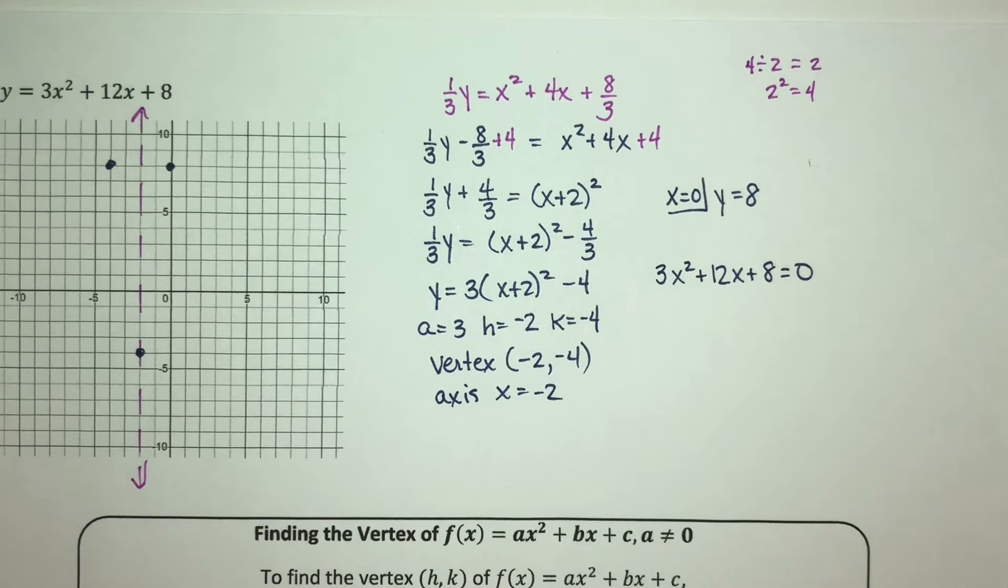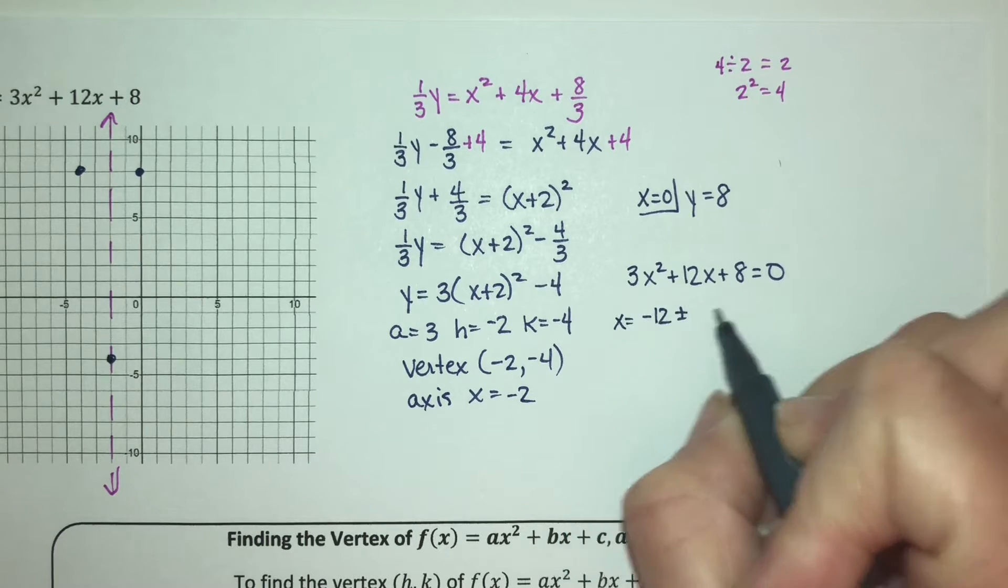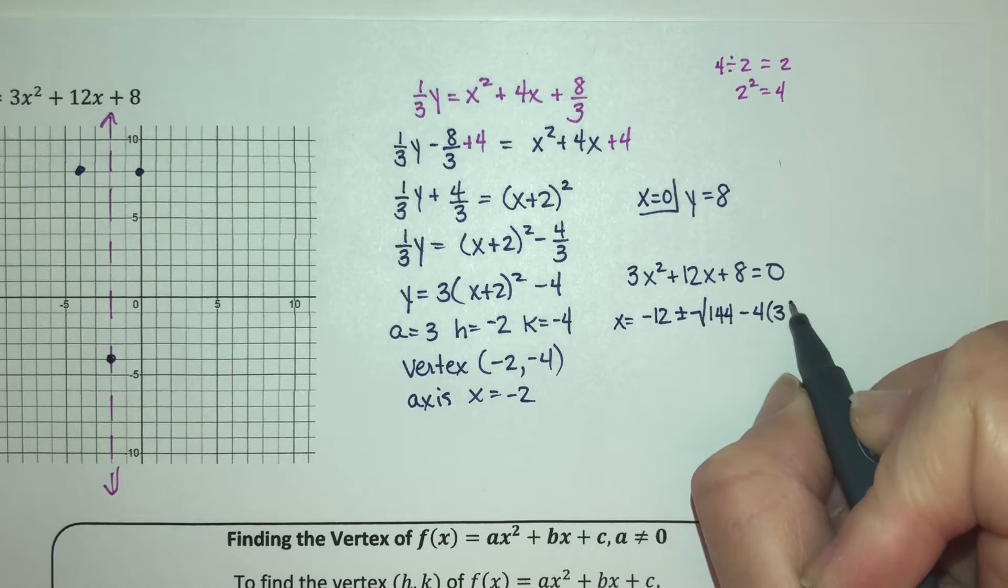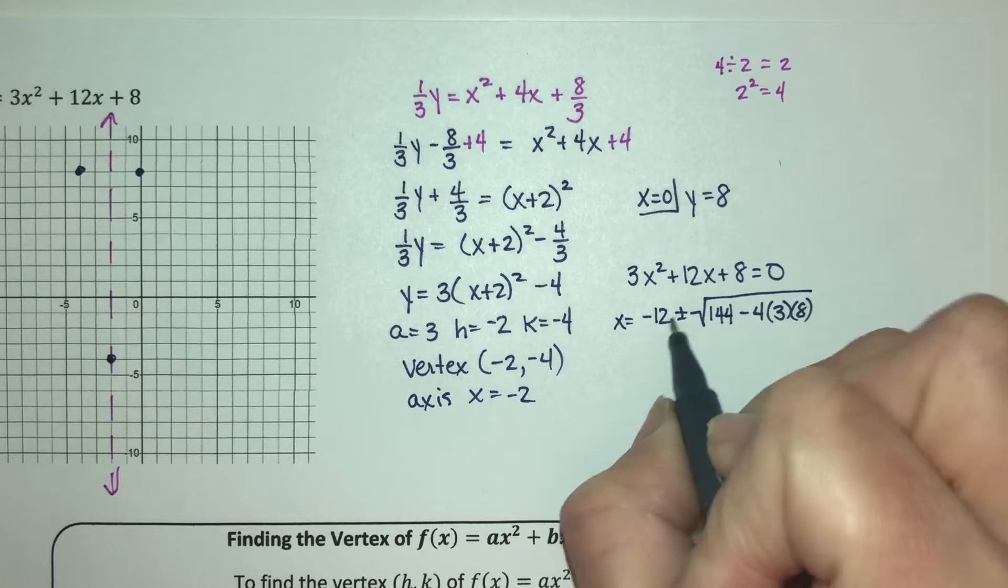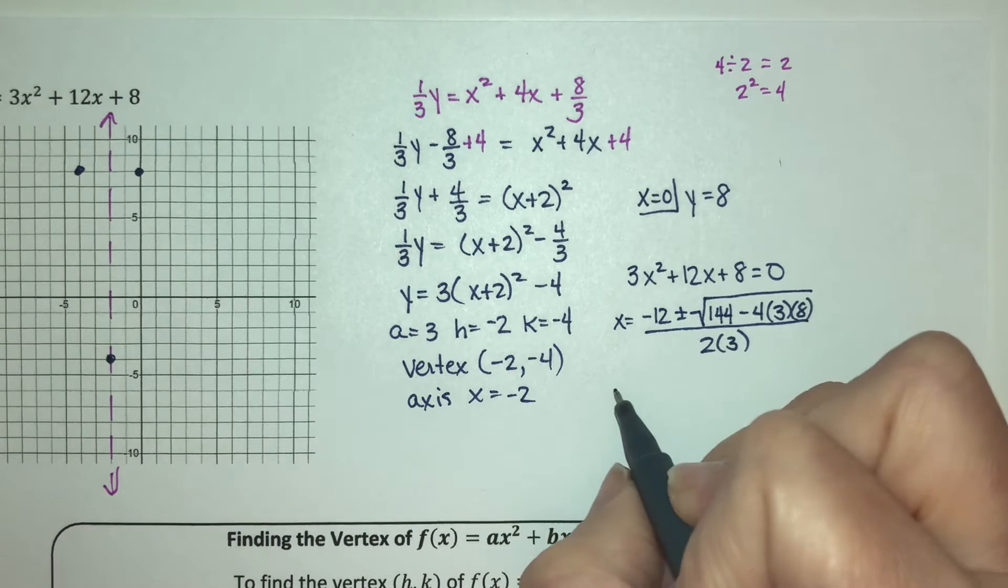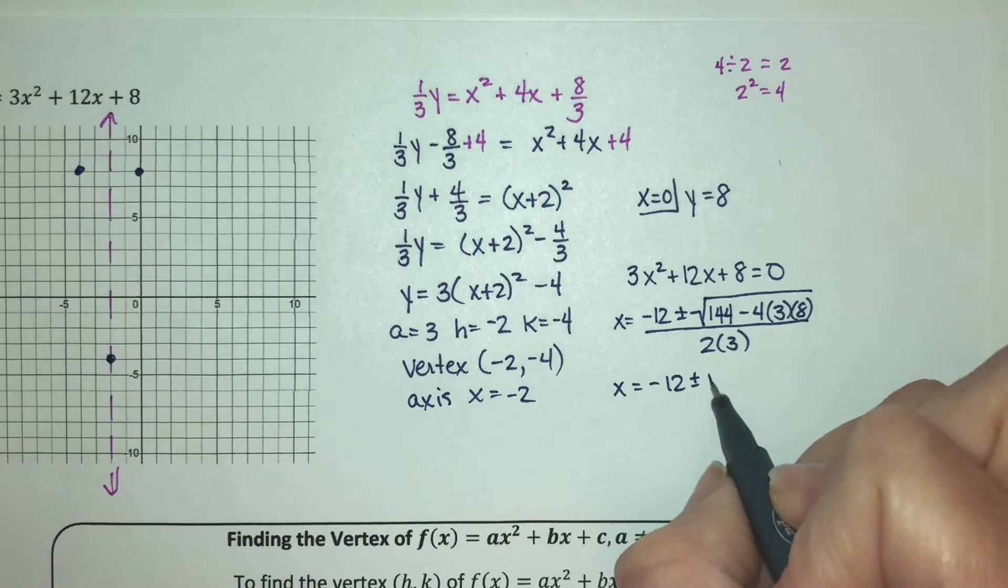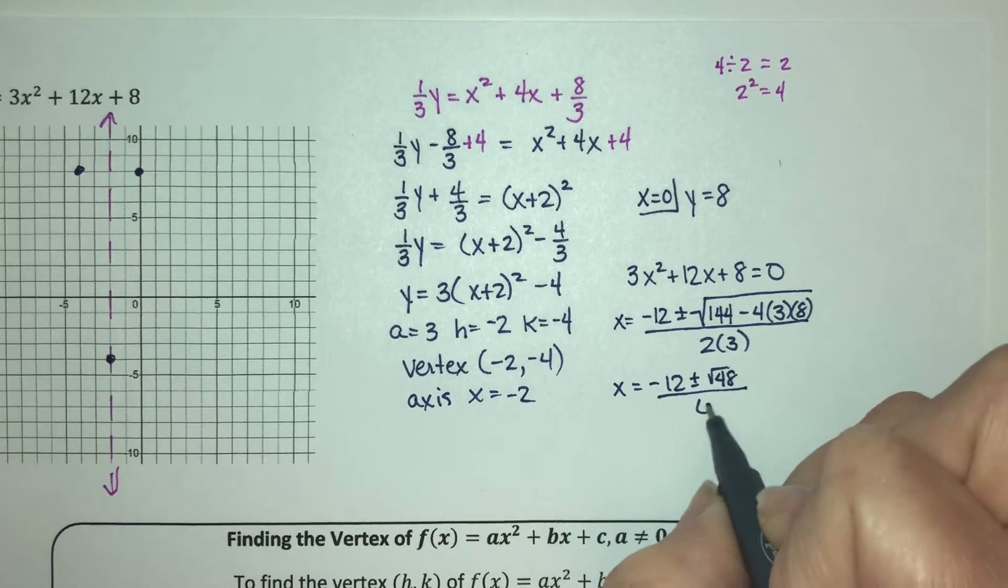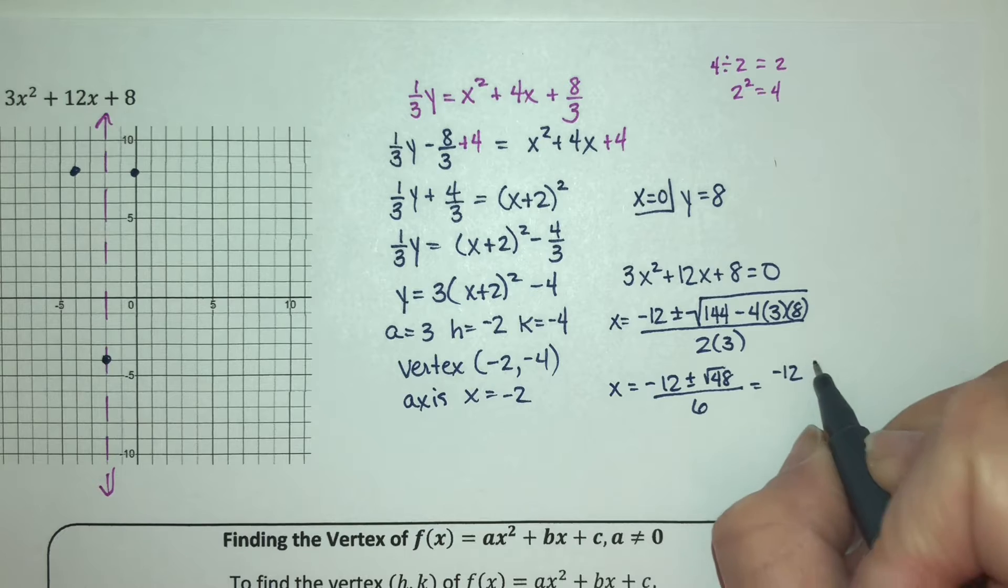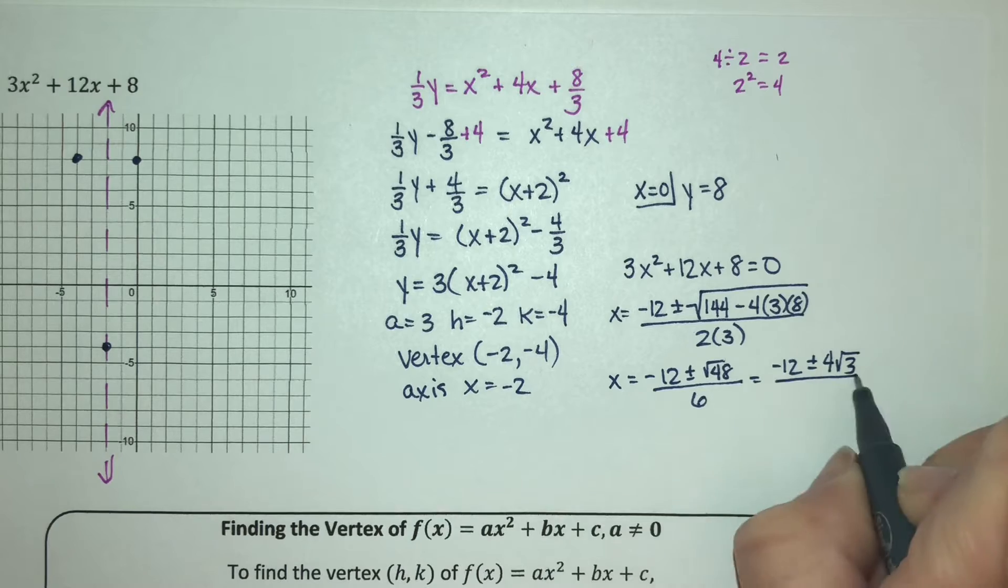So now let's go to the quadratic formula because this doesn't factor. My x value is -12 ± √(b² - 4ac) over 2a. So √(144 - 4(3)(8)) over 2(3). This gives me x = -12 ± √48 over 6.